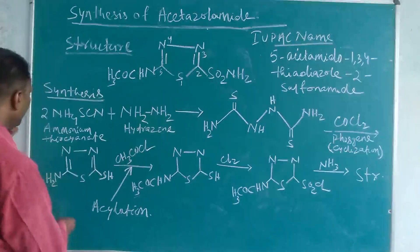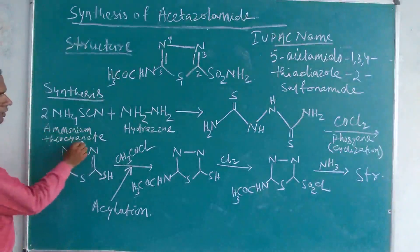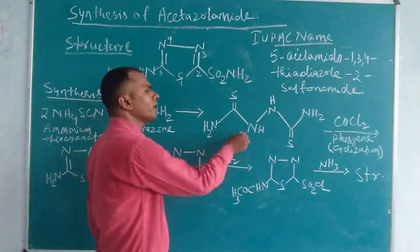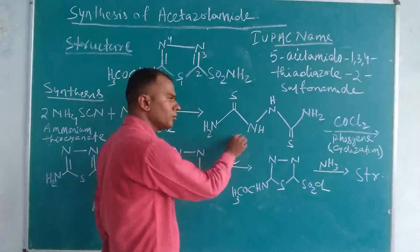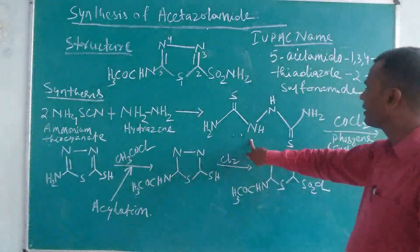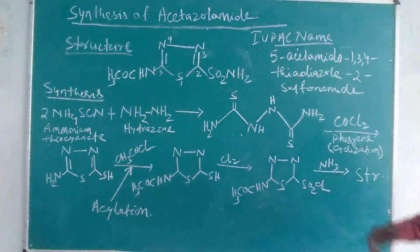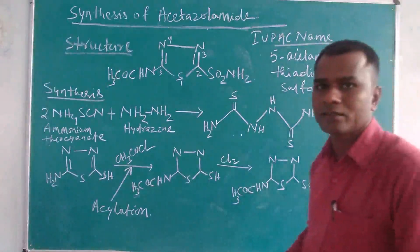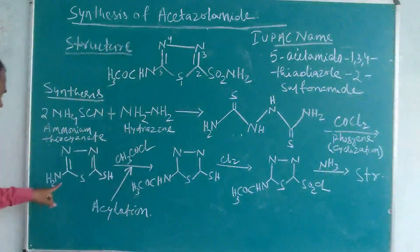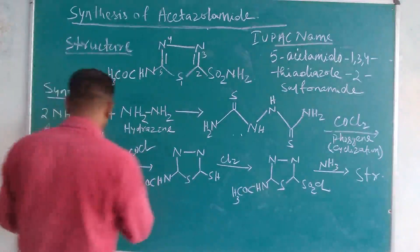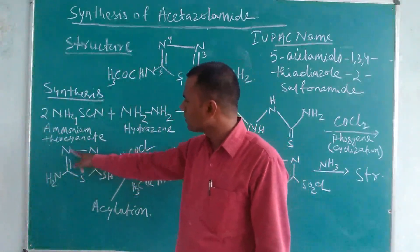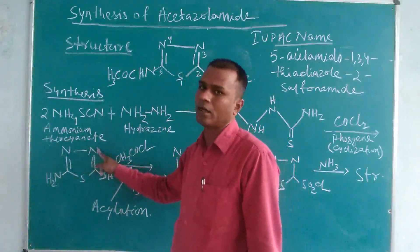Again, to summarize: ammonium thiocyanate reacts with hydrazine to produce a thiosemicarbazone derivative compound. When this intermediate product reacts with phosgene, it gives a cyclization reaction, giving the cyclic product: 2-amino-5-mercapto-1,3,4-thiadiazole.